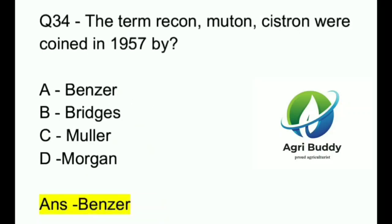Question 34. The terms Recon, Muton, and Cistron were coined in 1957 by? A. Benzer. B. Bridges. C. Muller. D. Morgan. And the answer is Benzer.